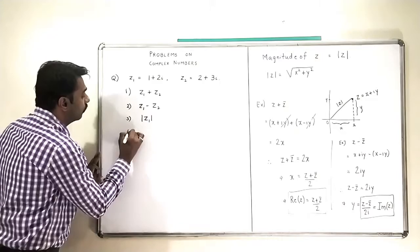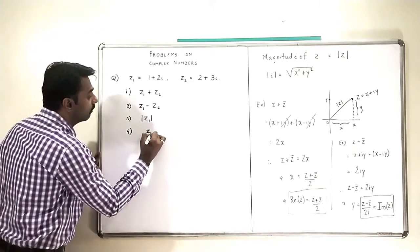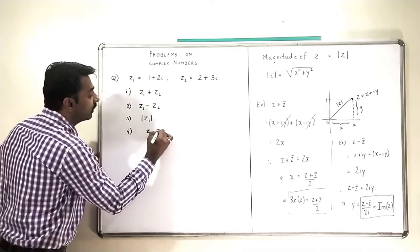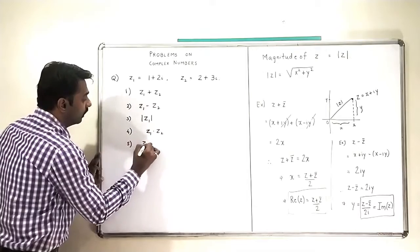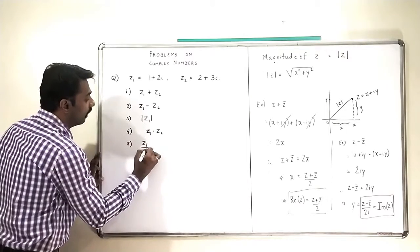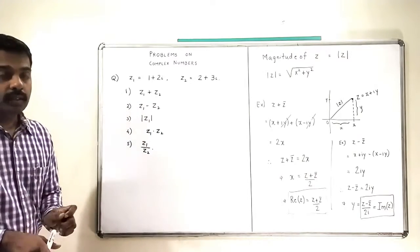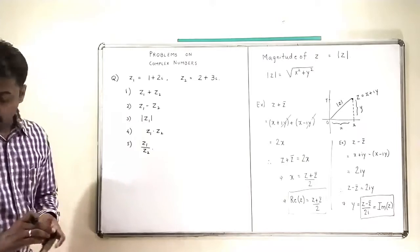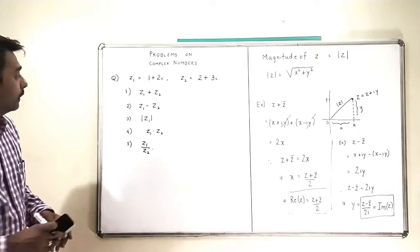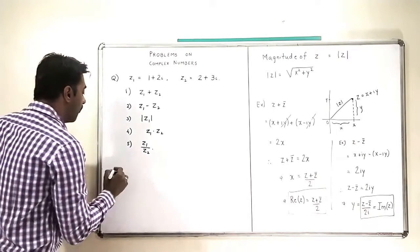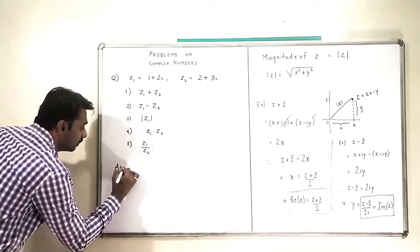Then we will try to find what is Z1 multiplied by Z2. We will do these simple calculations so that we will be fast enough in the next sessions.